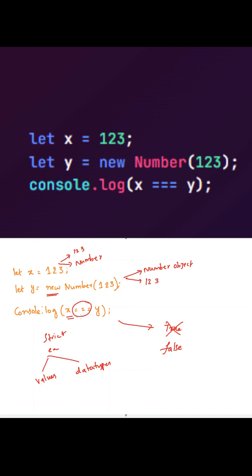Now if you compare the x and y values, even though the values, that is 123, are both similar, the data types are different. Here the data type is number, whereas here the data type is object. So due to this, it will return false.